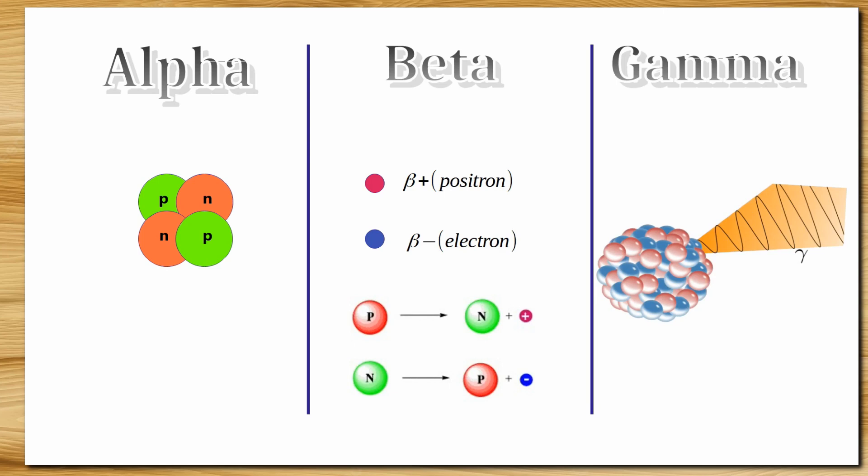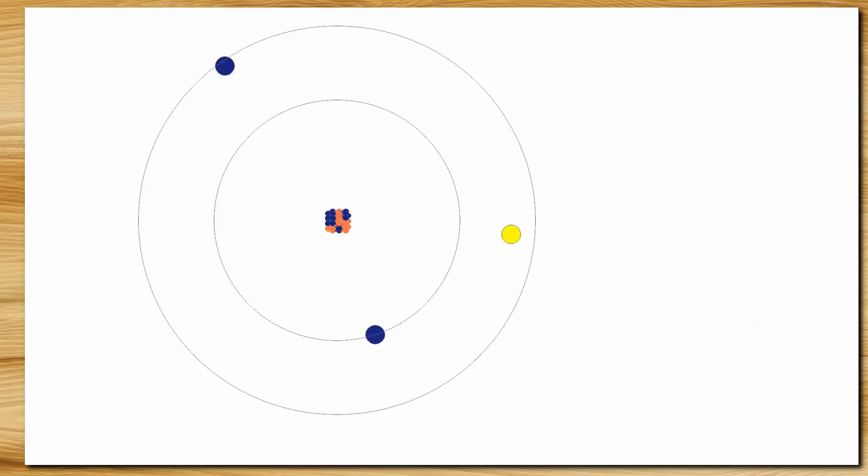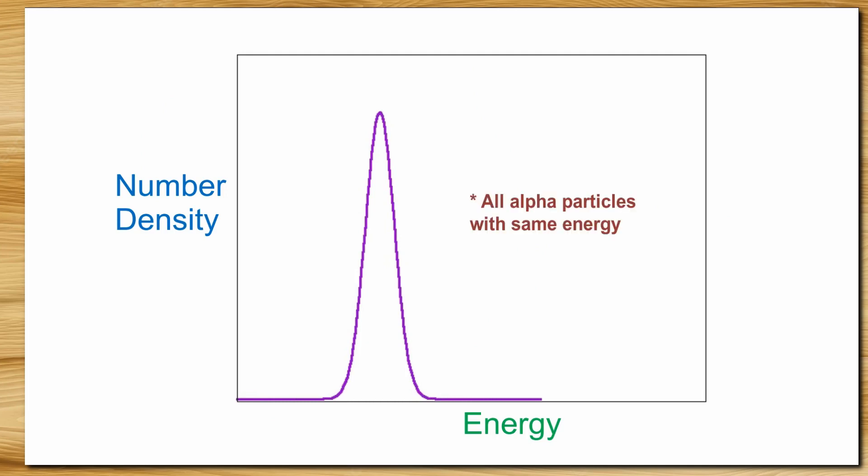After the discovery of radioactivity, scientists started performing several experiments to determine the energy of emitted particles. When the number density of the emitted particles were plotted against its energy, the alpha particles showed a narrow spike. That means, in case of disintegration of a particular nucleus, all the alpha particles are emitted with the same amount of energy.